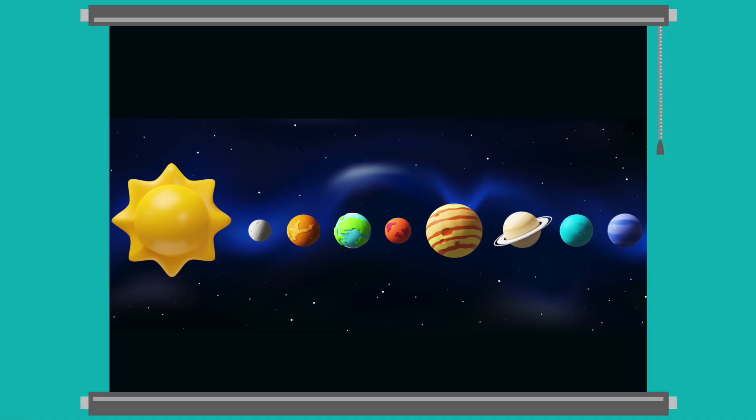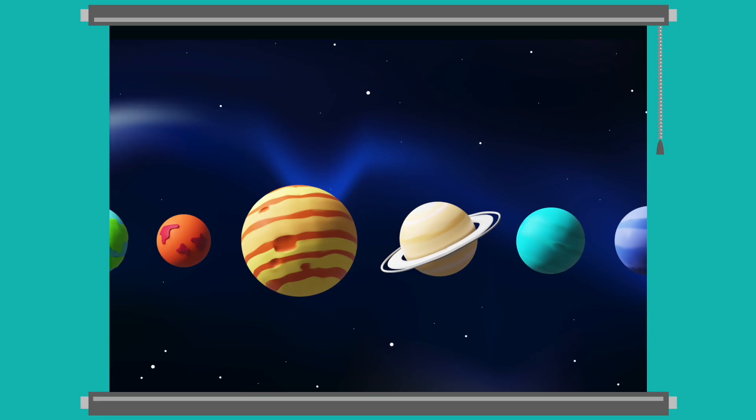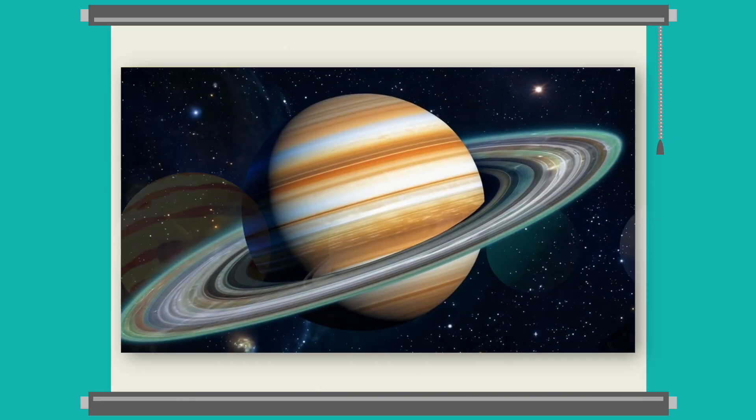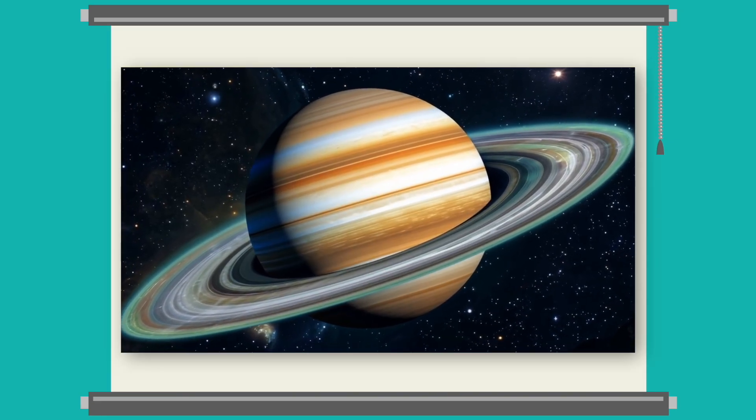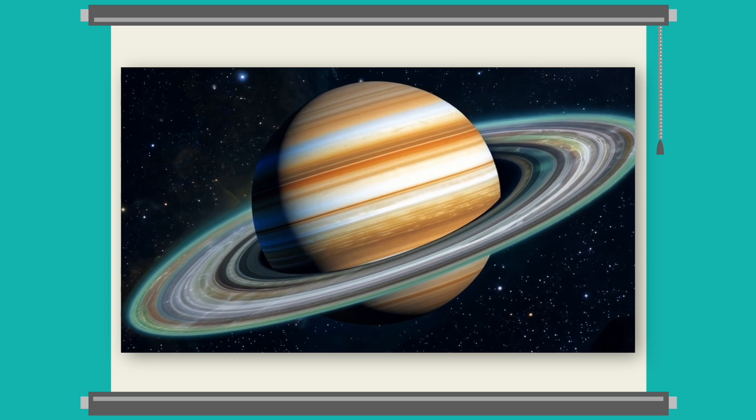You might have noticed the planets are all different sizes, colors, and materials too. Like Saturn here. It's a really big planet made of gas, with bright rings made of ice and rocks that hang around it.